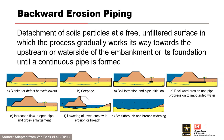Backward erosion piping is an internal erosion potential failure mode for levees and embankment dams that has historically caused numerous failures. It is defined as detachment of soil particles at a free, unfiltered surface, in which the process gradually works its way toward the upstream or water side of the embankment or foundation until a continuous pipe is formed. To occur, there must be a flow path or source of water, an unprotected exit such as a free face or inadequately filtered exit, erodible material within the flow path, and the material being piped or the material directly above it must be able to form and support a roof or pipe.